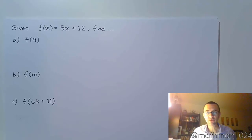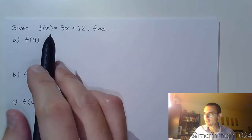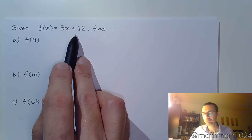Alright, so we're back with evaluating functions. Let's see what we have here. We've got some weird stuff going on. First of all, we've got our function f of x equals 5x plus 12. Nothing crazy there.